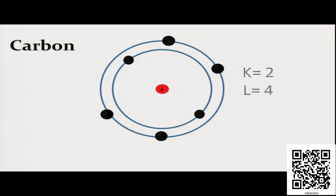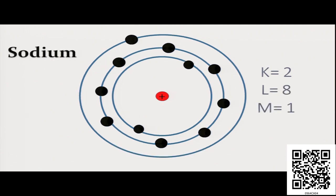Similarly, if you take another example, in case of sodium, eleven electrons are there and they are distributed as such: in the K shell two electrons, in the L shell eight electrons and in the M shell one electron. So for the case of sodium, the outermost shell is your M containing one electron.